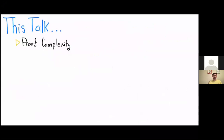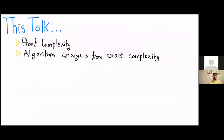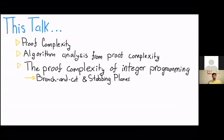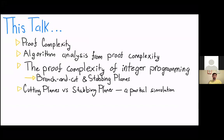This talk is about the proof complexity of integer programming. I'm going to start with a brief overview of proof complexity, then how you can use proof complexity for algorithm analysis, and then in particular the proof complexity of integer programming. Here I'll talk about how modern algorithms for integer programming — branch and cut algorithms — can be formalized as stabbing planes. Then I'll talk about how another proof system for integer programming, cutting planes, relates to stabbing planes, and show a partial simulation of stabbing planes by cutting planes.